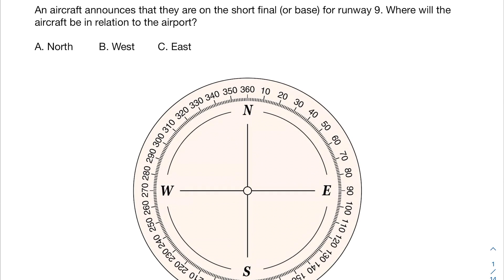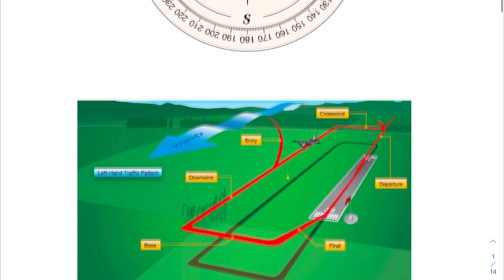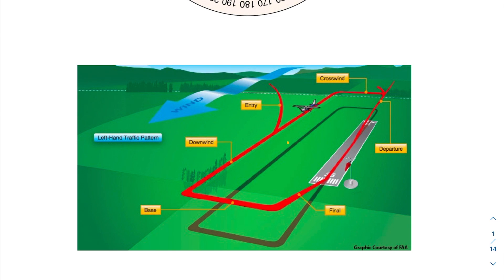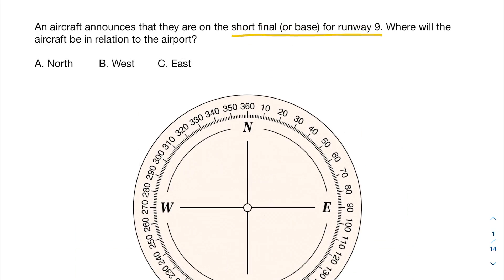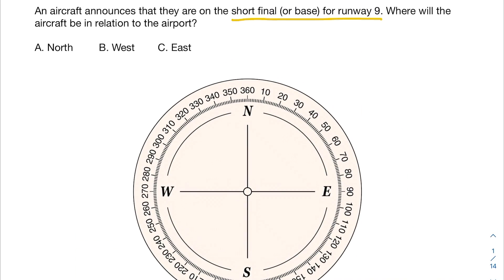Just like with the previous video, let's highlight the important bits of this problem. The short final or the base for runway nine — if we take a look at this diagram, it means that we are on this final leg here, we're about to hit the runway. You'll also notice that within this problem it doesn't say if we're right or left.